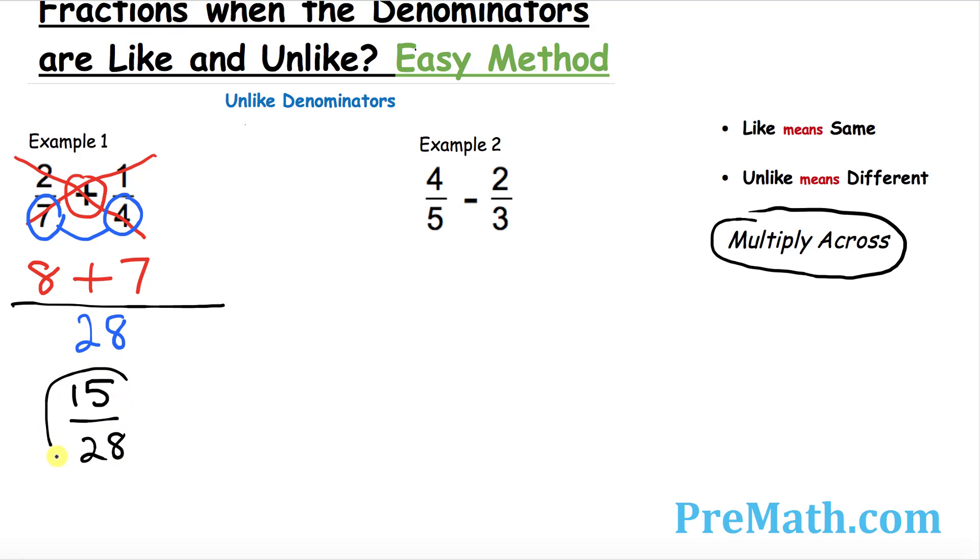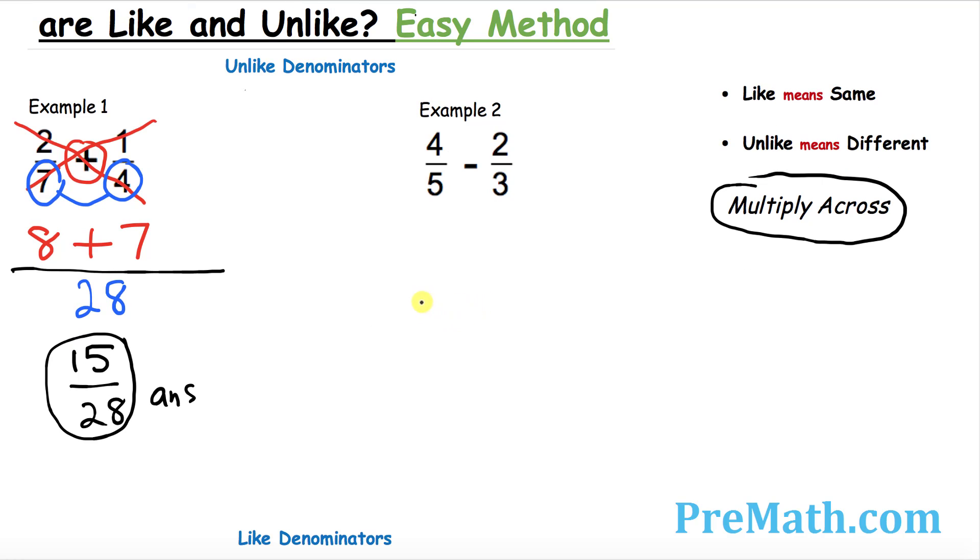And that is our answer. Let's move on to the next example. In this case we're going to be subtracting two fractions whose denominators are unlike as well. So the very first thing I want you to do is go ahead and put a long fraction bar.